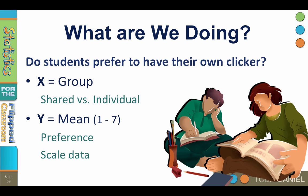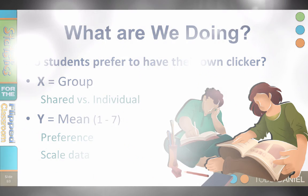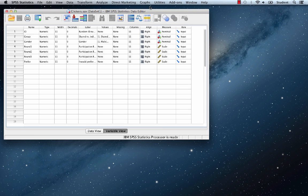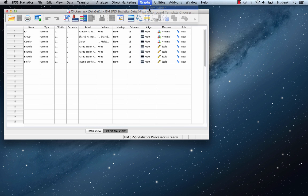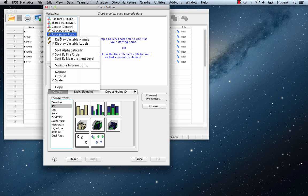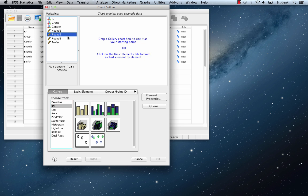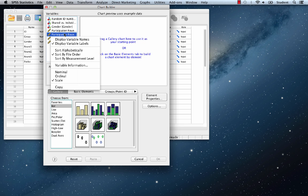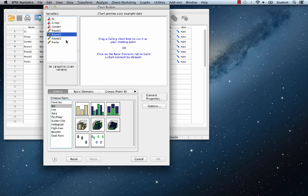Create a bar graph to determine whether students prefer to have their own individual clicker. We'll go to graphs and chart builder. We'll click reset, and remember that when you're seeing variable labels, you can right-click or control-click to display variable names or to display the variable labels. Let's choose variable names, and now we're going to go to the bar option and drag the simple bar chart up into the canvas.